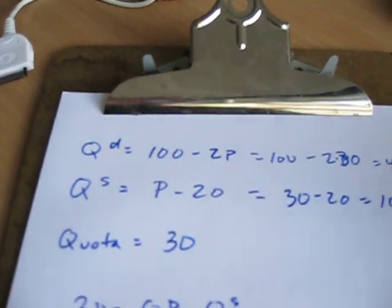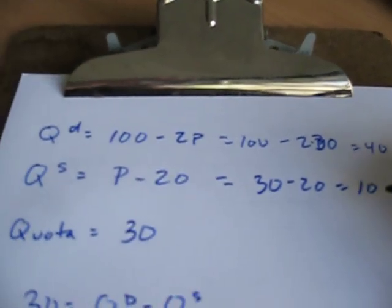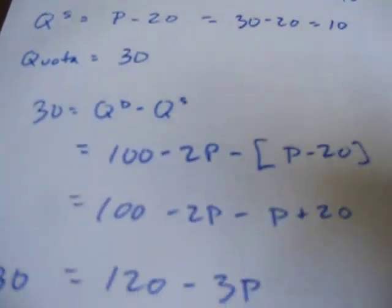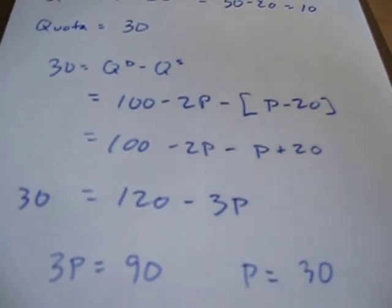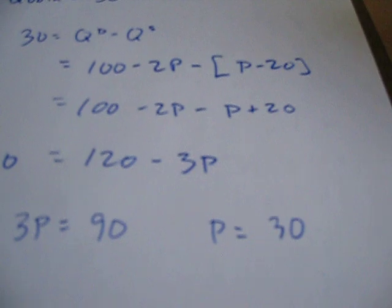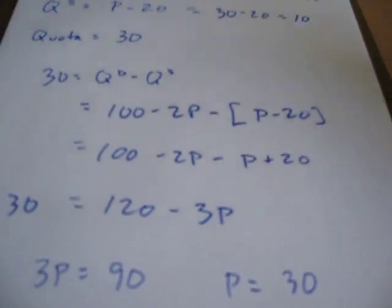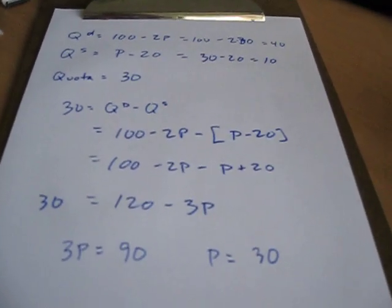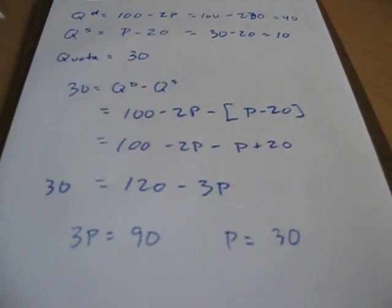Good way to double-check your math. Now you have your quantity demanded, your quantity supplied, and your price in this country. You're given the terms of trade price overseas. So now you can go through, calculate all your areas, determine whether the country is better off or worse off — consumer surplus, producer surplus, quota rents, and so on.